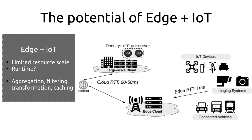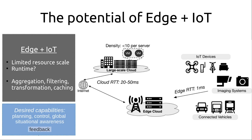People are thinking about edge systems to be able to deal with this. Edge systems are largely deployed as many different small edge clouds that are more local to the actual physical devices. They have very limited resource scale, and the question is what should a runtime look like for that type of environment, where you don't have many resources but still need to handle as many tenants. One benefit of the edge is very fast access to devices — 5G is expected to have one millisecond round-trip time. We'll certainly think of performing traditional operations like aggregation, filtering, transformation, and caching.